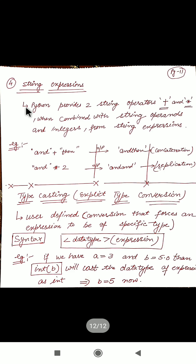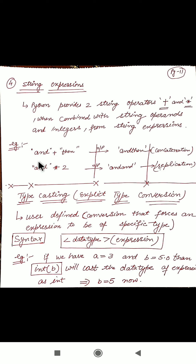Next are string expressions. To solve string expressions we use two operators: the plus operator and the multiplication (star) operator, used for two different purposes. The plus operator is used to concatenate two strings. For example, if we take two strings and use the plus operator, we get the concatenation of those two strings as the output.